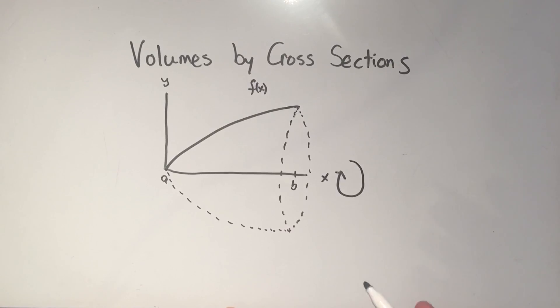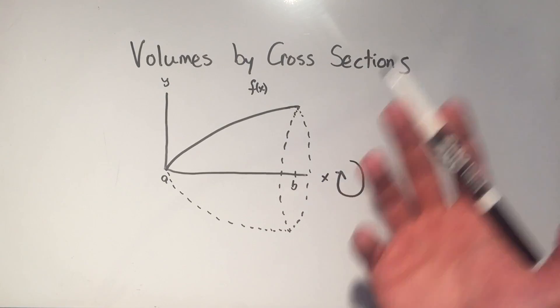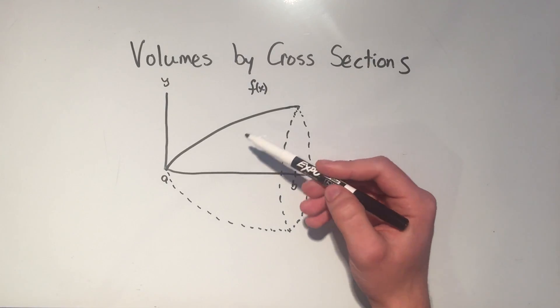So the way we do this, for this method, is we start simply. Well, maybe I don't know how to find the volume of that cone thing, but something that I do know how to find the volume of, or rather the area of, is a circle. A circle is pretty easy to find the area of.